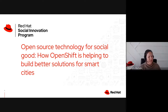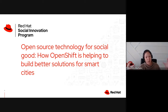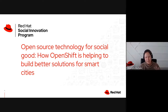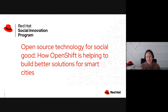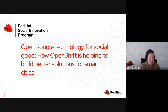We're going to give you a little bit of background and context before we jump into the project details that Chris will share. He will give you a high level of how we're using OpenShift. The title of our presentation is how OpenShift is helping to build better solutions for smart cities — basically how we're using open source technologies for social good, in partnership with Boston University, your students, and also Smart Beer. Should we do quick introductions?